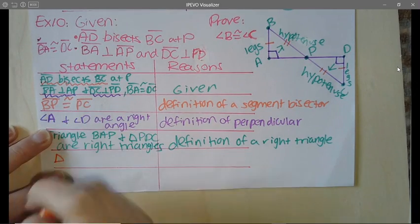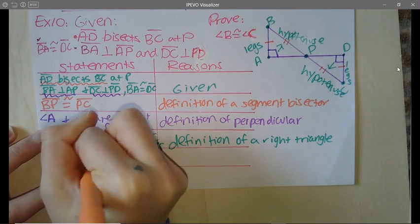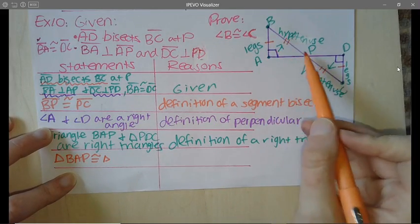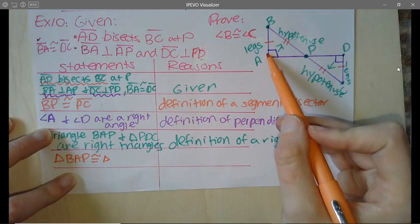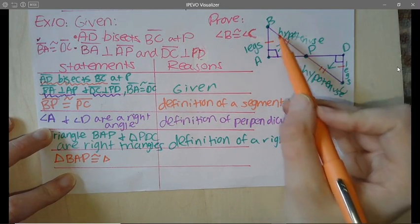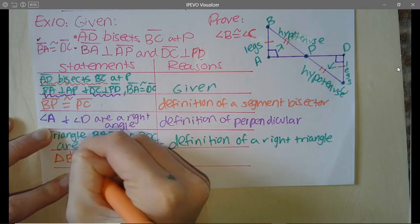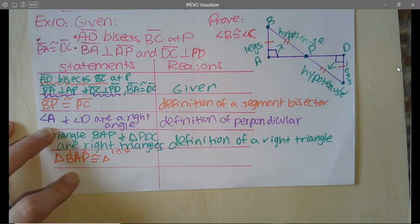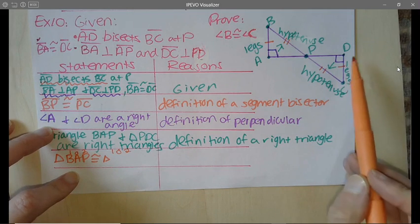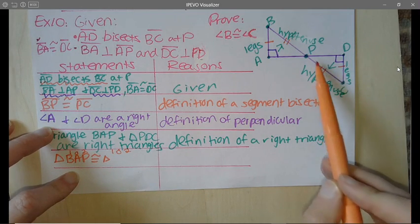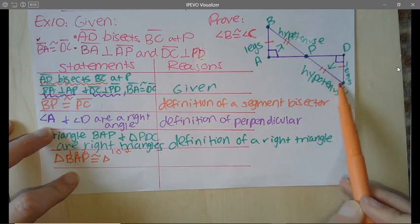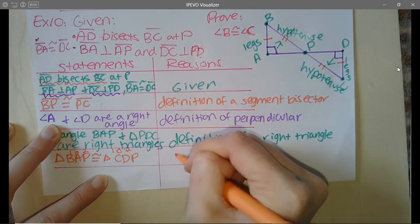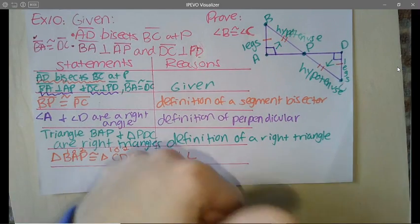Tracing triangle BAP: one tick mark, zero tick marks, two tick marks — so the corresponding triangle is CDP with the same pattern. Triangle BAP is congruent to triangle CDP by the HL theorem.